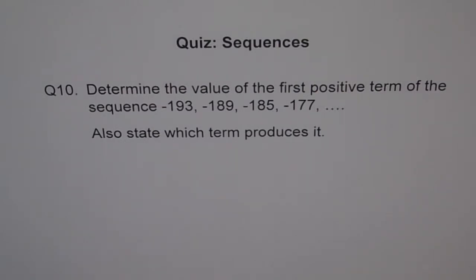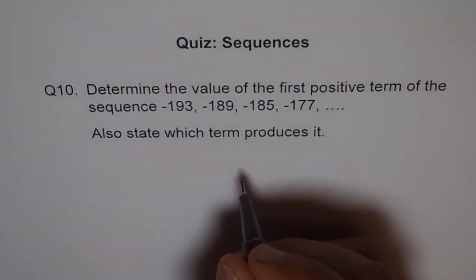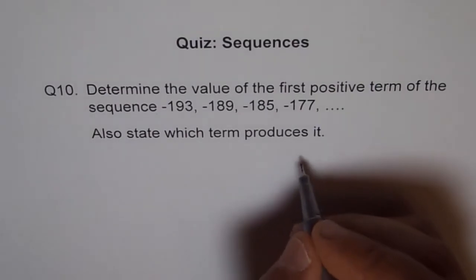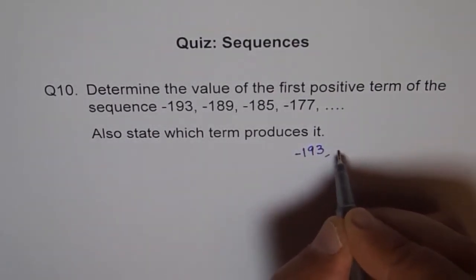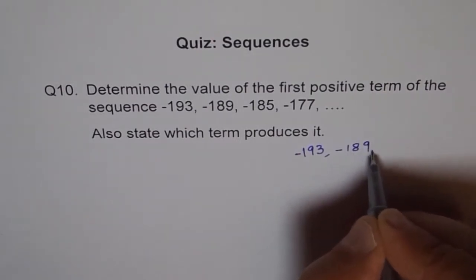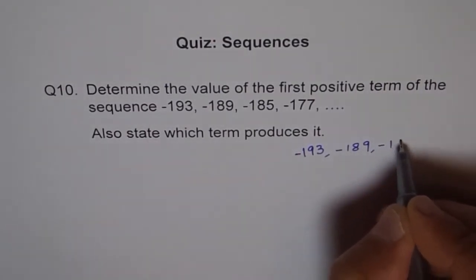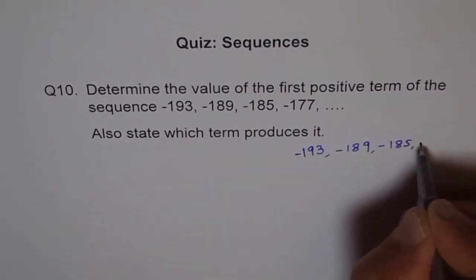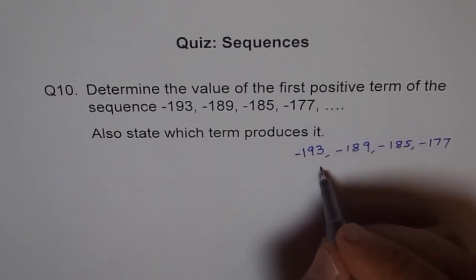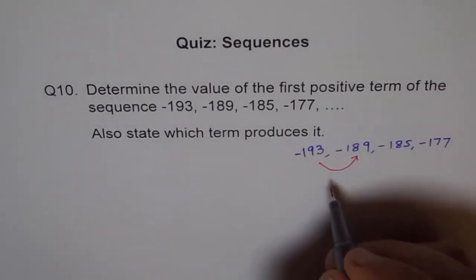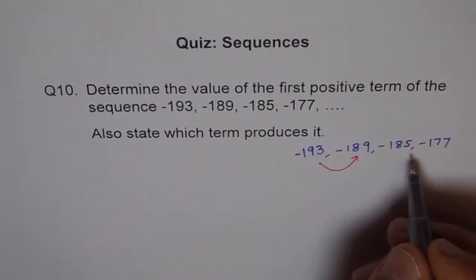Well, now explore this sequence. You are going from minus 193 to minus 189 to minus 185 to minus 177. Now, how do you go from one term to the other? They are increasing, right? Less negative means increasing.